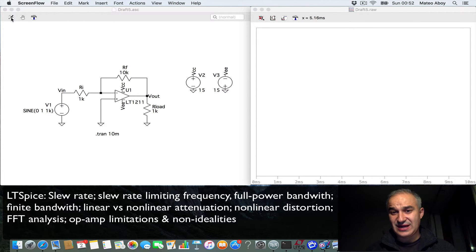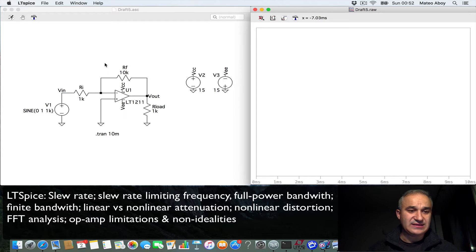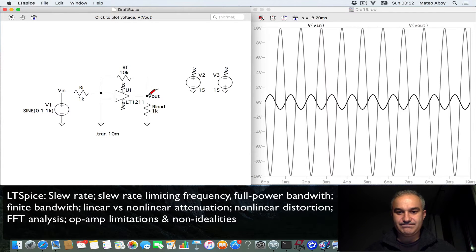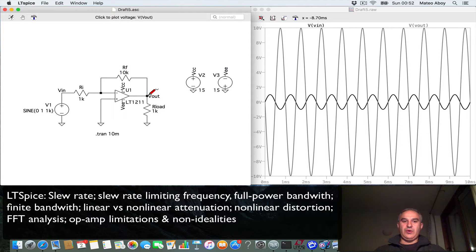Let's run the transient analysis for 10 milliseconds. We have done the analysis. We can use the probes to plot the input, a suspected 1V and the output. We expect minus 10V or 10V inverted. There you go.